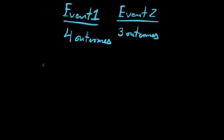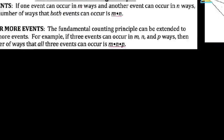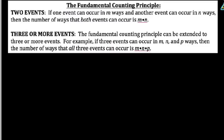So we could have made our outcome tree a lot easier if we'd just said four outcomes for the first event, three outcomes for the second event, then there are 12 total possible outcomes for both. And this can be extended to three or more events. If the first thing can happen m ways, the second n ways, and the third p ways, it's just the product of these three. In general, we multiply the number of outcomes for each event together to get the total possible outcomes.